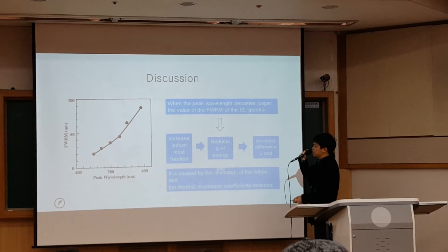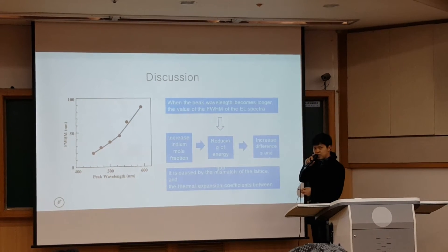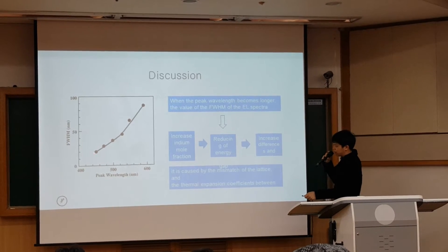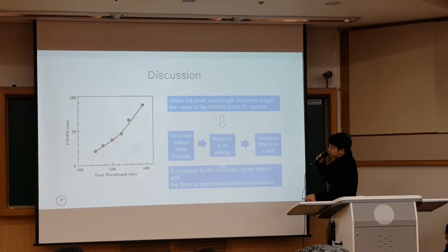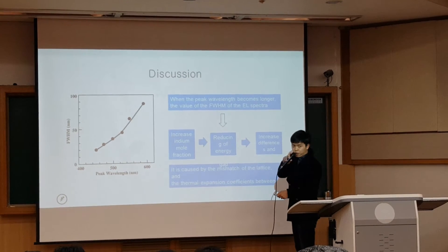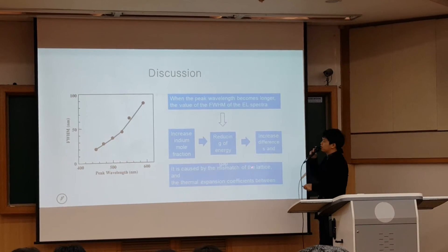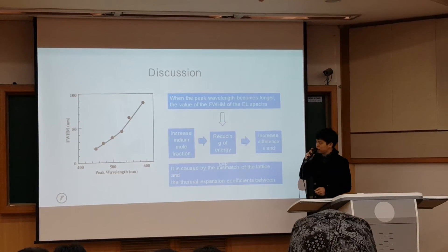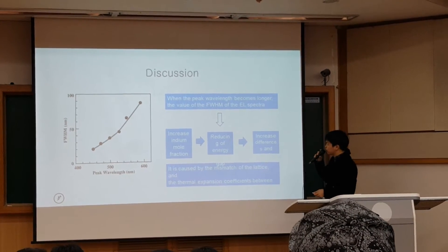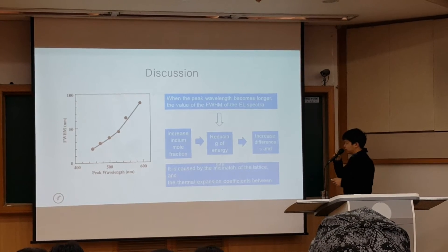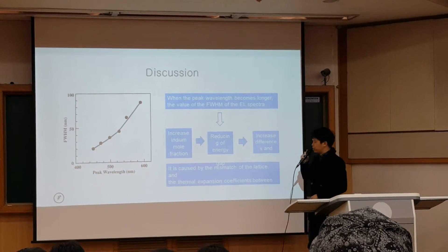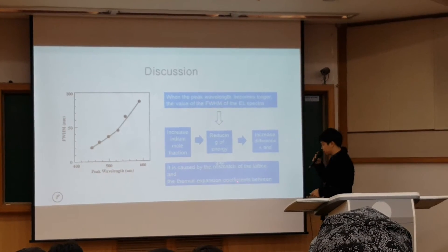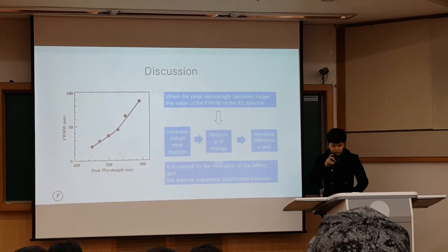Now you are watching the full width at half maximum of the EL spectra as a function of peak wavelength. If peak wavelength increases, the FWHM value also increases. The mechanism is: if you increase the Indium gallium fraction, it causes a reduction in energy, which increases the difference between the well layer and barrier layer. This is caused by the mismatch of lattice and thermal expansion coefficient between the well and barrier layers.